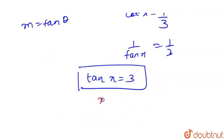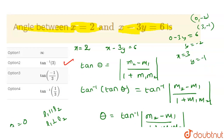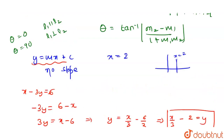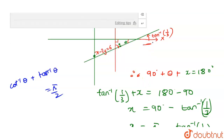Applying tan⁻¹ on both sides gives x = tan⁻¹(3). So the actual angle between the lines x = 2 and x - 3y = 6 is tan⁻¹(3), which is option 2. One important note: since the topic involves slope, the reference angle is always made with the x-axis, and then we find the angle between the given lines.